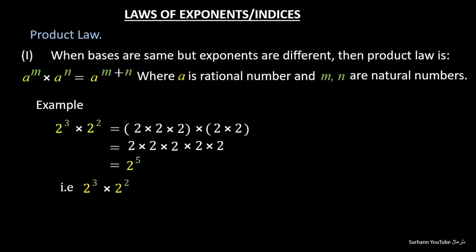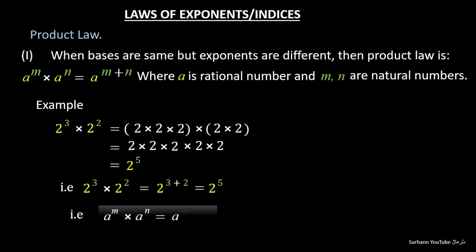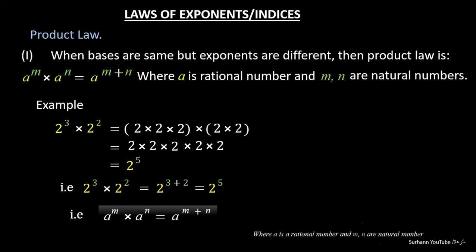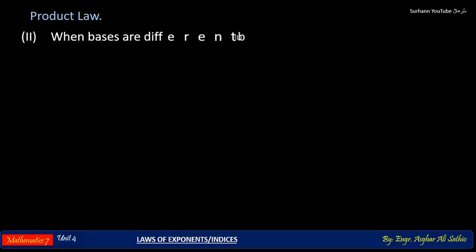2 with exponent 3 and 2 with exponent 2 — if we just add the exponents of 2, the answer will be the same. Remember this point: if bases are the same, then their exponents will be added, where 'a' is a rational number and 'm' and 'n' are natural numbers.